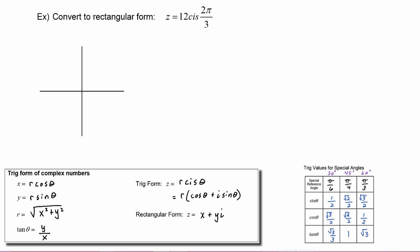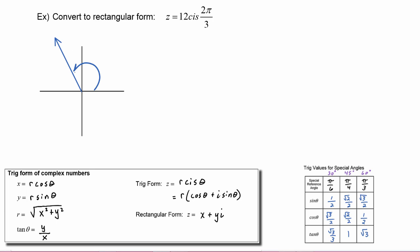In this example we have to convert to rectangular form: z equals twelve cis two pi over three. Because theta is two pi over three, we know that z is in quadrant two, and we know its radius is twelve.